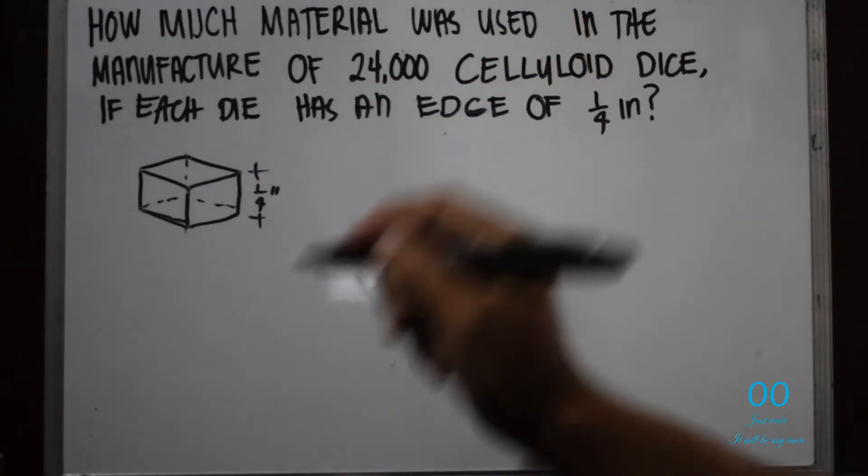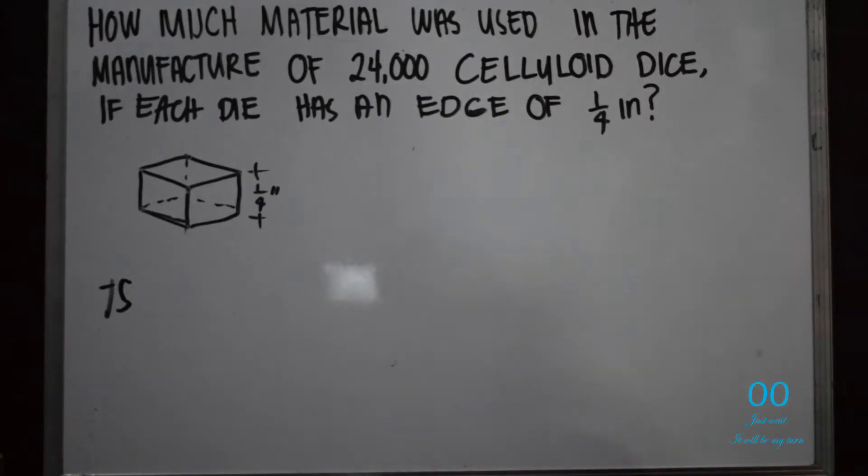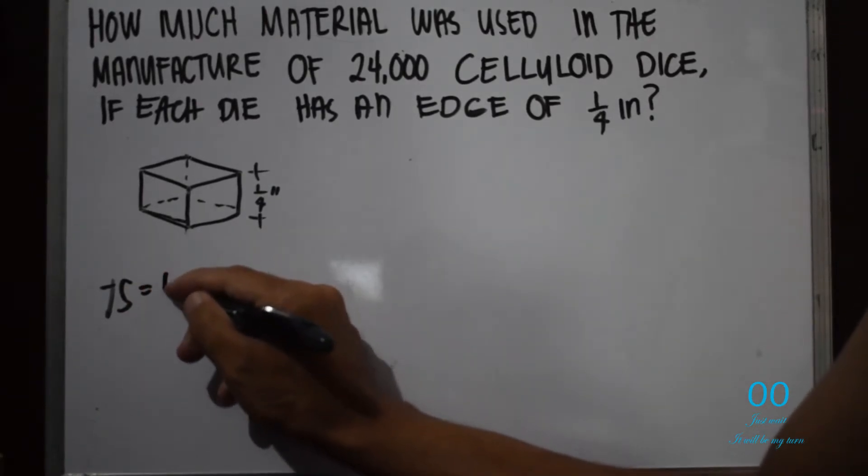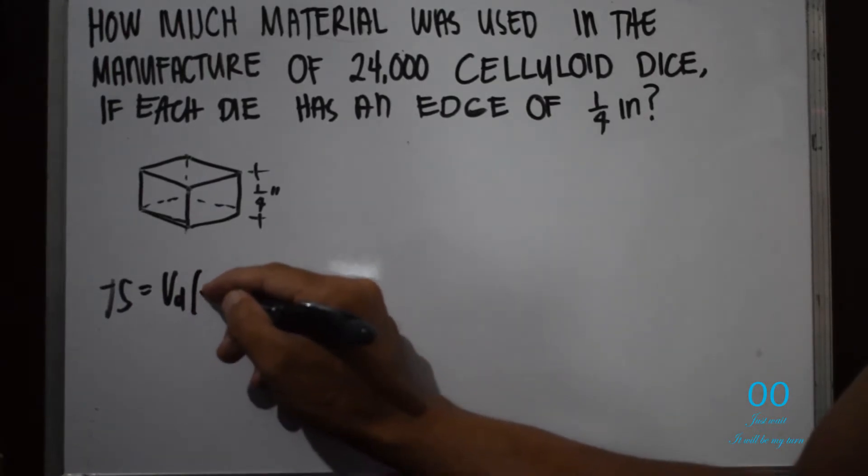To get the total material used, we call that TS, which is equal to the volume of one dice times the total number which is 24,000.